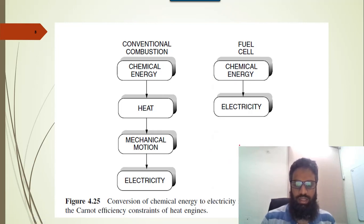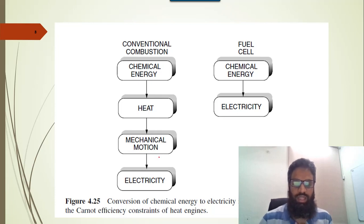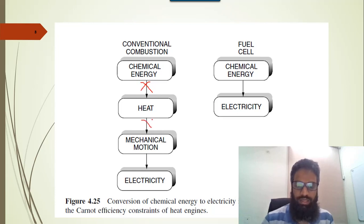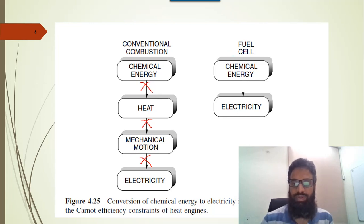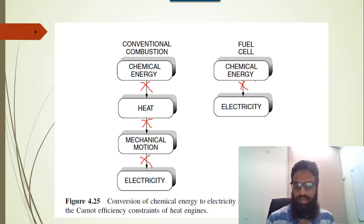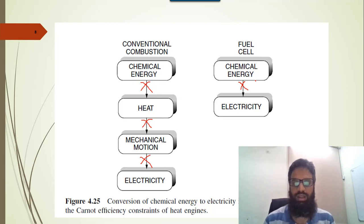In a conventional combustion engine, chemical energy is converted into heat, then heat into mechanical energy, and finally mechanical energy into electricity — with energy loss at each step. In a fuel cell, chemical energy is converted directly into electricity, so there is only one conversion loss. Comparatively, the conventional combustion engine efficiency is very low — approximately 15 to 25 percent — compared to the fuel cell.